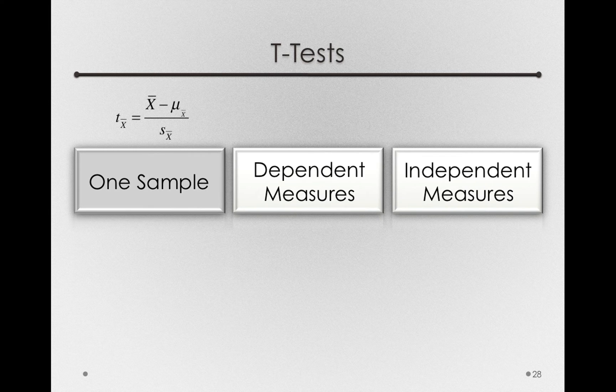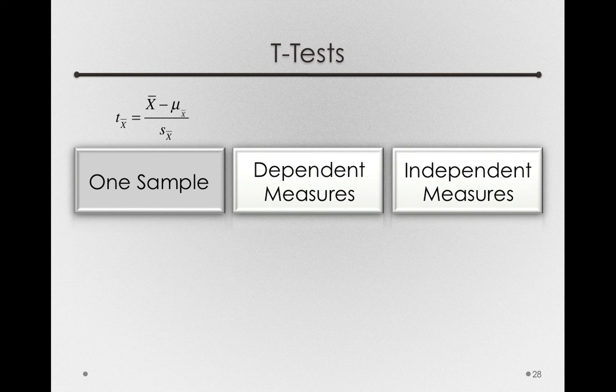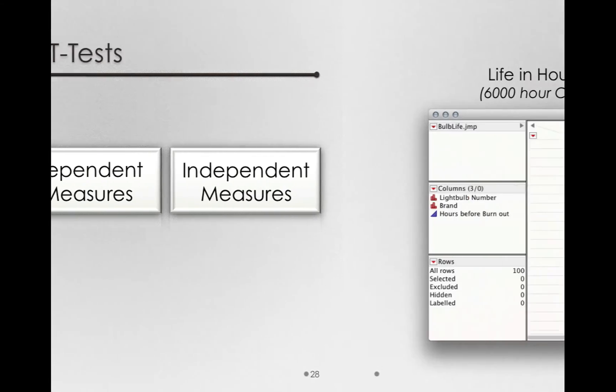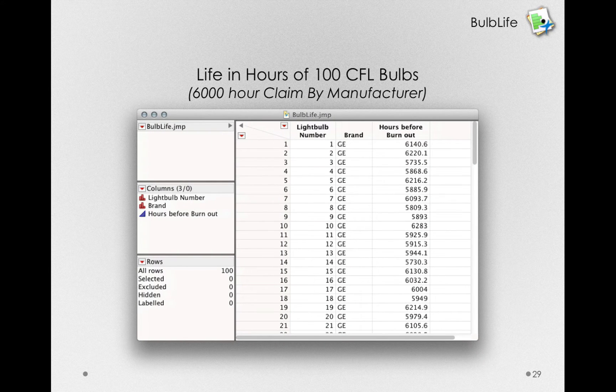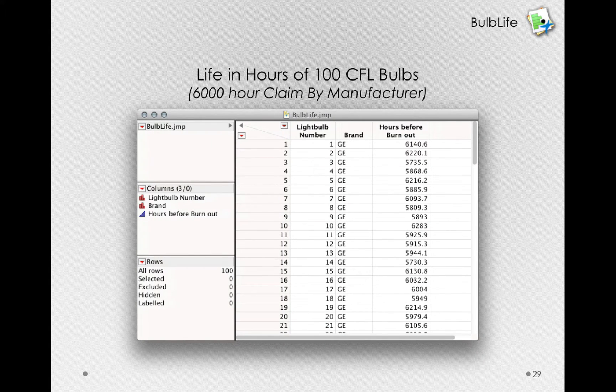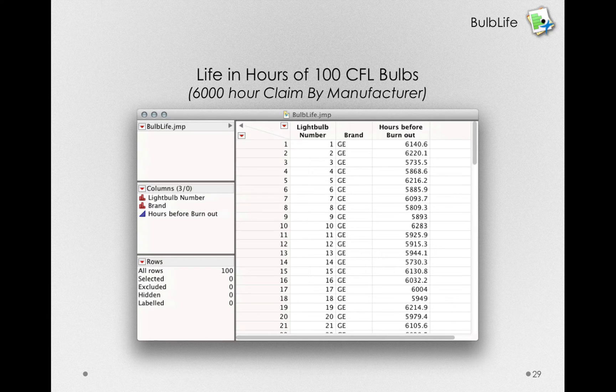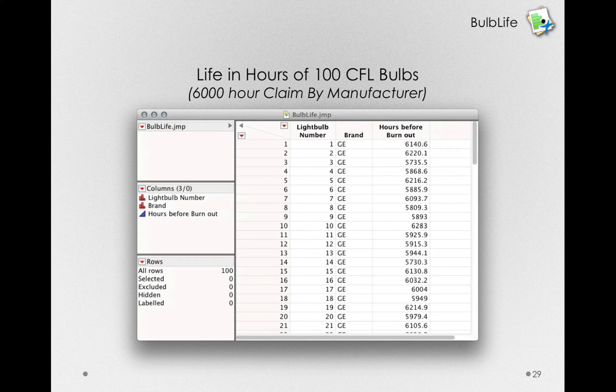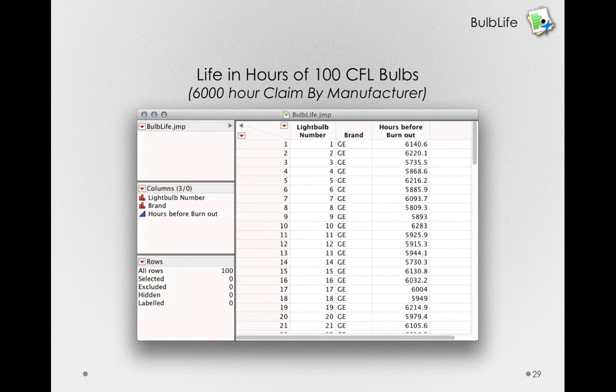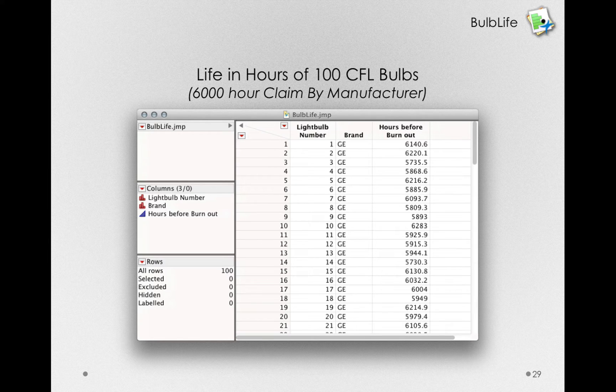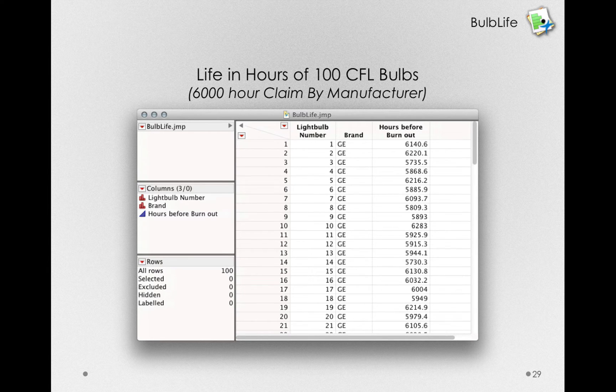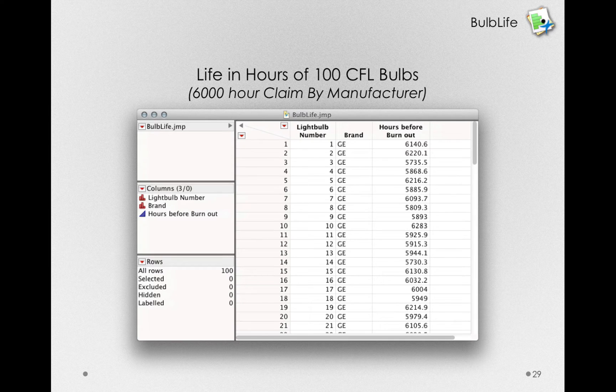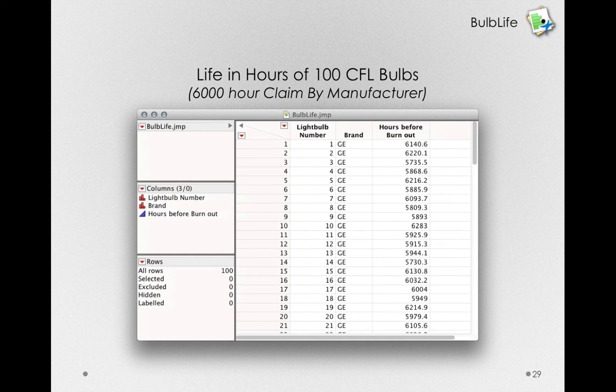Let's see how we can calculate this using JUMP. Now if I go to the dataset, Life and Hours of 100 CFL Bulbs, you can find this in the module journal under Bulb Life. This is a scenario where a manufacturer has made a particular claim. They claim a 6,000-hour life of their CFL bulbs. Now we have a claim to test. We don't know the population standard deviation. However, we can collect data on 100 CFL bulbs and measure their lifespan.